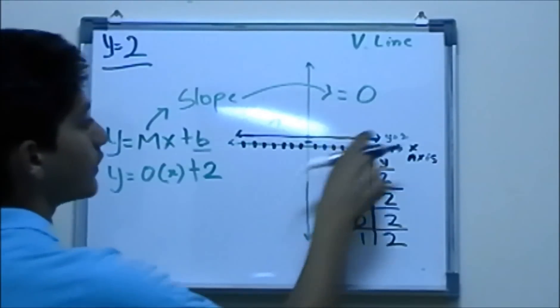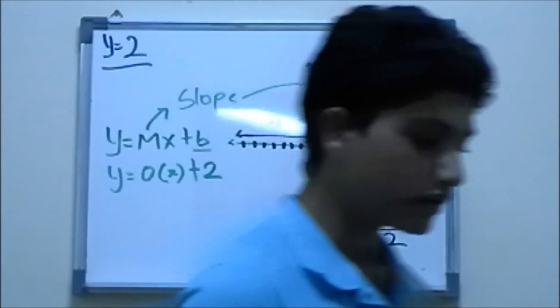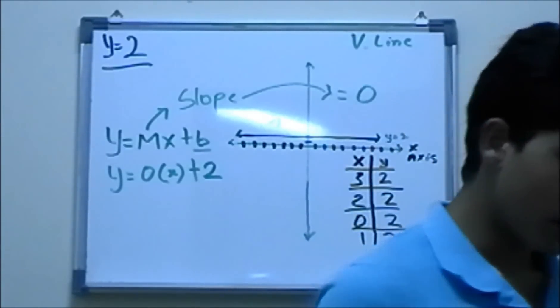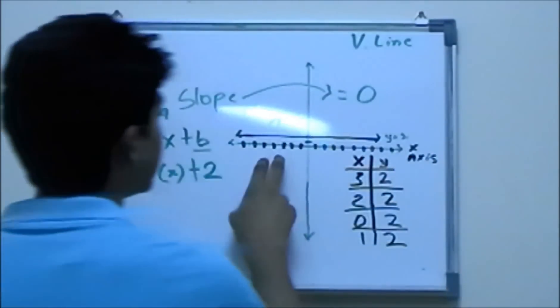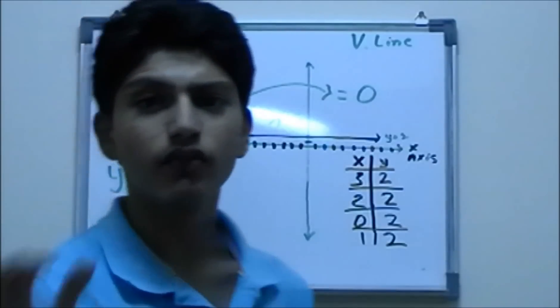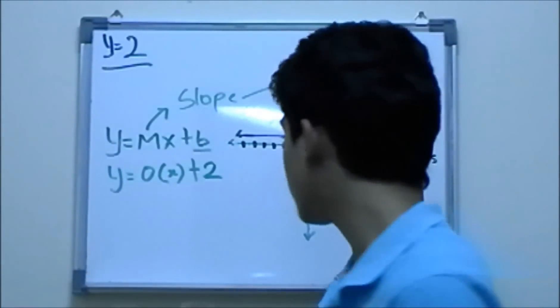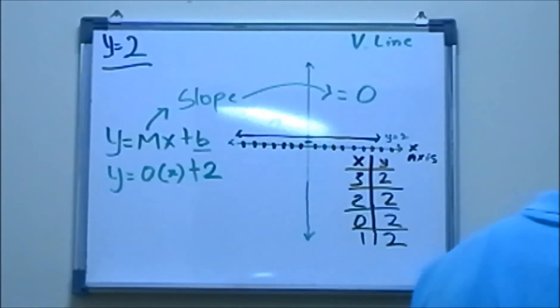This is also considered a degenerate equation because it's a constant value. Y is always equal to two, so it's always constant.